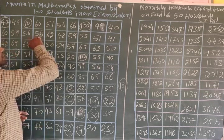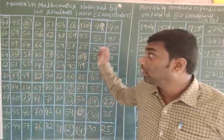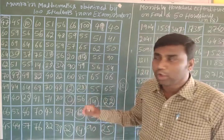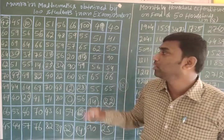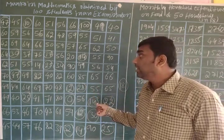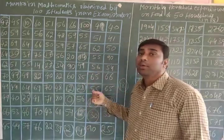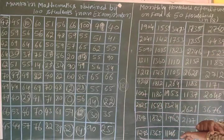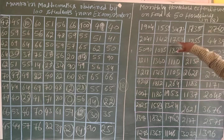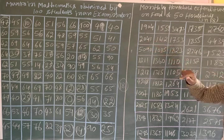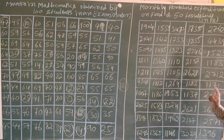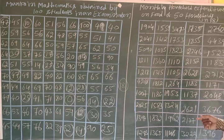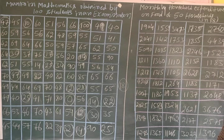With nearly 100 students' marks available, even a teacher gets confused about how many passed, failed, attended, got first class, second class, or what the average marks are. It is highly impossible to calculate or check from raw data. Similarly, the monthly expenditure table shows values like 1904, 2041, 1085, 10360, 1137, 2177, 2048 rupees — it is highly impossible to explain what these figures mean without organizing them.